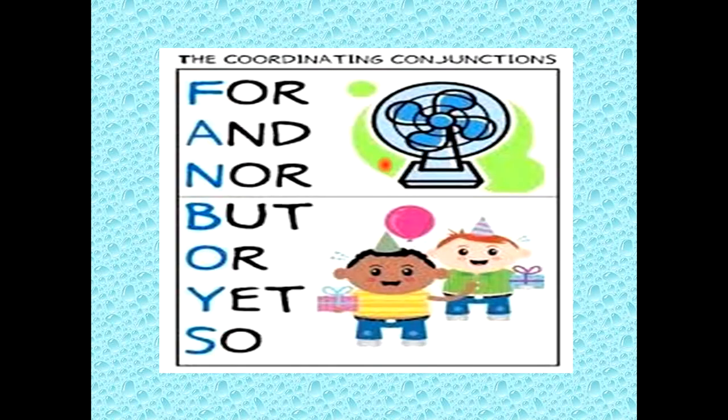We can easily memorize them by keeping this in mind: the coordinating conjunctions are for, and, nor, but, or, yet, so. If you see the first letter of each word - F-A-N-B-O-Y-S - it means FANBOYS. So you can keep this in your mind for learning these coordinating conjunctions.